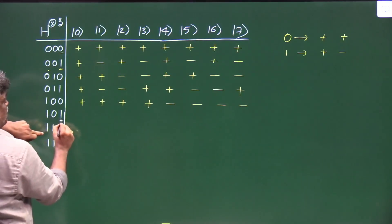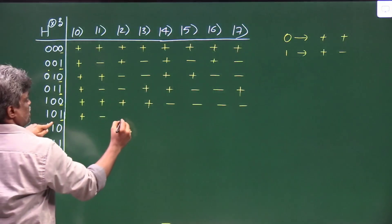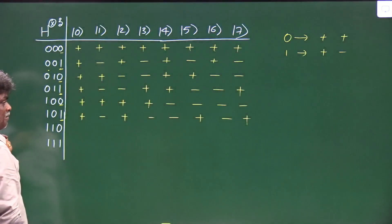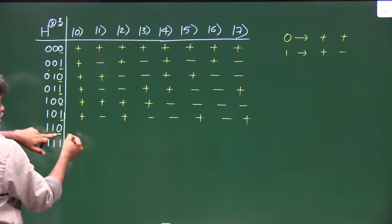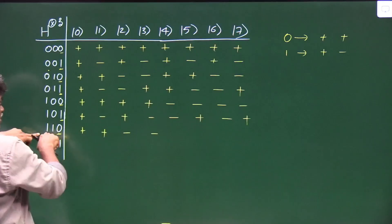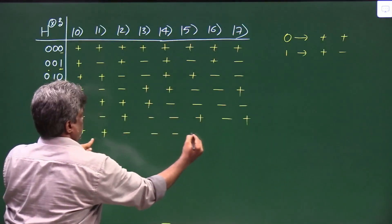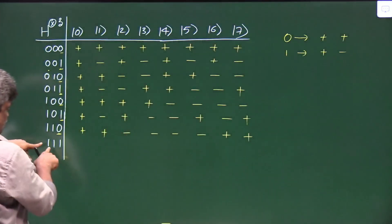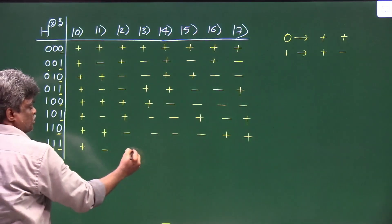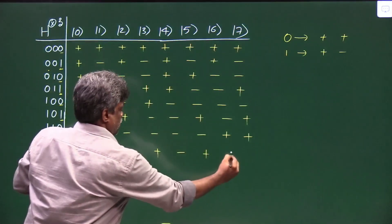Continuing H⊗3: for |110⟩, starting with first bit 1 → '+, −'. Next bit 1 → take opposite: '+, −, −, +'. Next bit 0 → repeat as-is: '+, −, −, +, +, −, −, +'. Wait — here starting is 0, so '+, +'. Next bit 1 → opposite: '−, −'. Next bit 1 → these entire things take opposite: '−, −, +, +'. For |111⟩: last bit 1, giving '+, −'. Again 1 → opposite. Again 1 → opposite: '−, +, +, −'... the pattern: '+,−,−,+,−,+,+,−'.